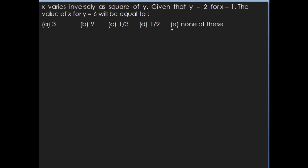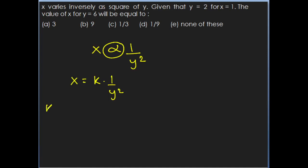The next question: X varies inversely as square of Y. Given that Y equals 2 for X equals 1, find the value of X for Y equals 6. X is inversely proportional to Y squared, which means X is inversely proportional to 1 upon Y squared. Removing the proportionality symbol, X equals k times 1 upon Y squared, where k is the proportionality constant.